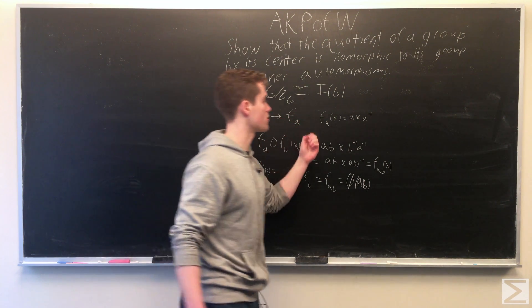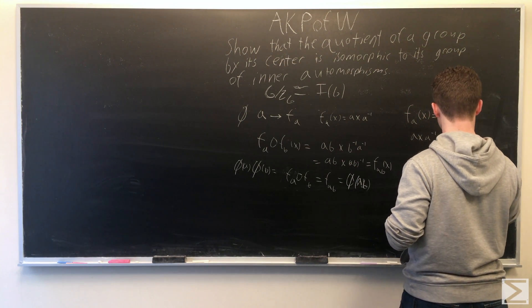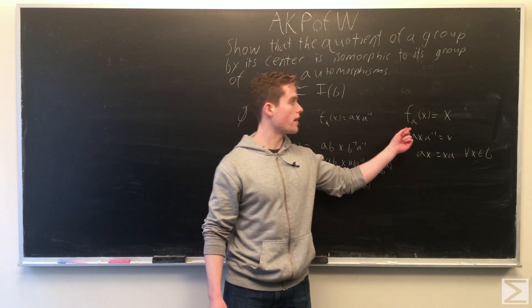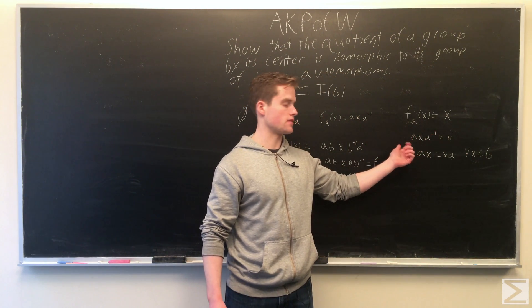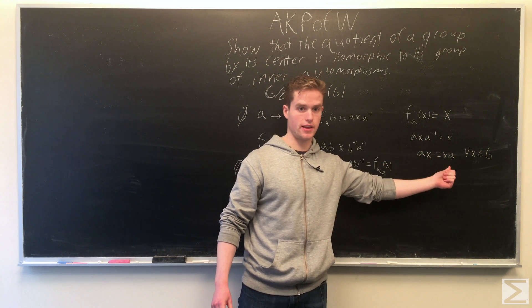We want F(A)(X) to give us X, which means AXA^(-1) = X, which is the same as AX = XA.